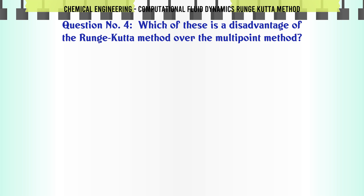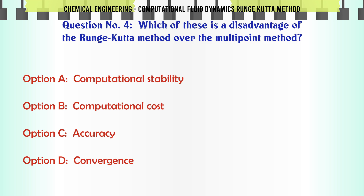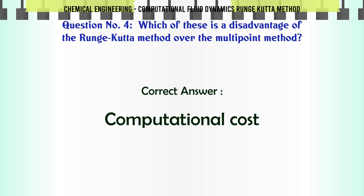Which of these is a disadvantage of the Runge-Kutta method over the multipoint method? A: computational stability. B: computational cost. C: accuracy. D: convergence. The correct answer is: computational cost.